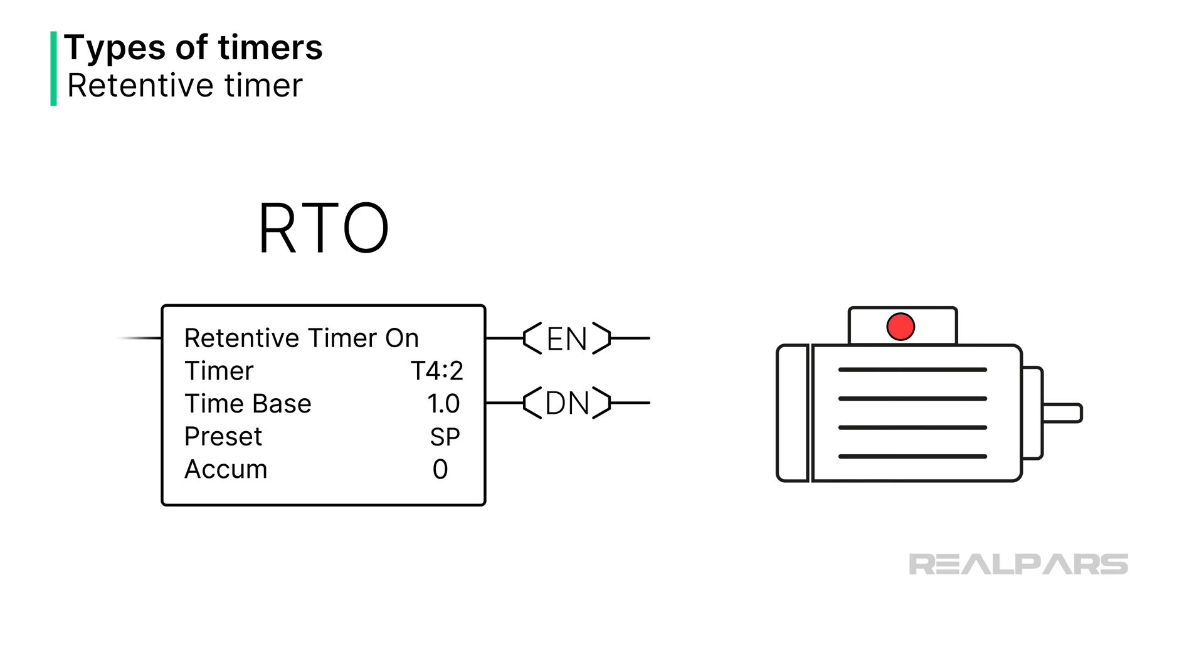A typical use of retentive timers is to track runtime on a piece of equipment, so that the optimal time for maintenance can be determined. In this case, the timer runs as long as the machine is running. Once the machine stops, the timer stops, but starts again once the machine starts back up. The retentive timer tracks total runtime, and once the preset has been reached, a maintenance flag is set, indicating it's time to change a roll of labels on a packing line for example.